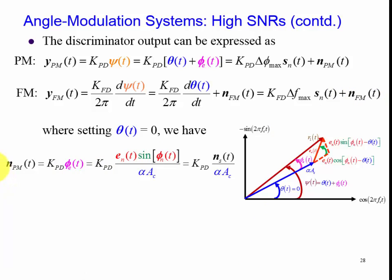So we can just look at the noise. The noise for the phase modulated signal is K_PD times phi of t. Notice we derived this expression earlier a couple slides ago, and we can replace that with the e_n sine of phi of t, which is that component, divided by alpha A_c.